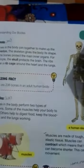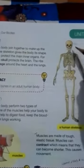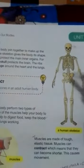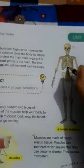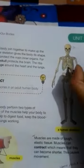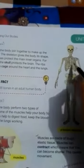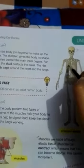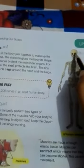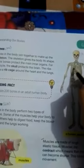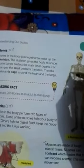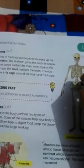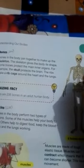Bones in the body joined together form a skeletal system. The skeletal system protects your internal organs like the brain, heart, and lungs. The brain is protected by the skull, and the rib cage protects the lungs and heart. The skeleton also provides shape to your body and supports it.